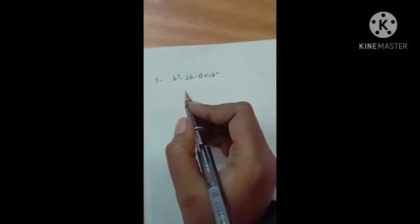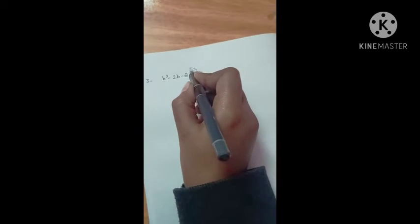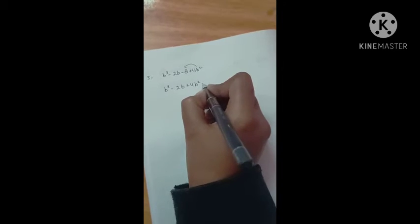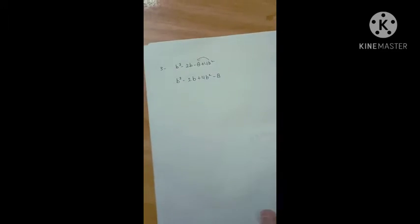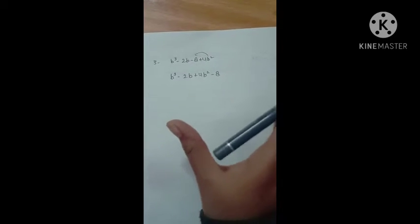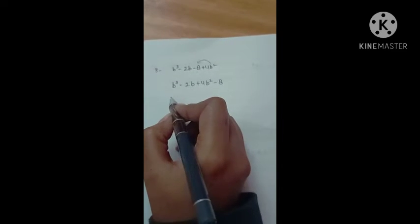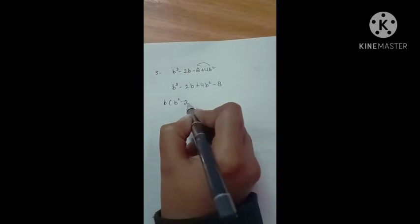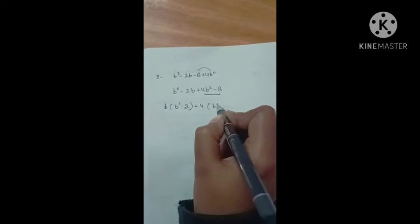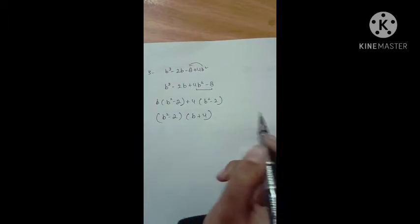Next: b³ - 2b - 8 + 4b². We rearrange by moving 4b², giving b³ + 4b² - 2b - 8. When you do lots of practice, you will know which term to move to get a suitable arrangement and a common binomial. We take b common from the first group: b(b² - 2), and 4 common from the second: 4(b² - 2). Then we take (b² - 2) as common, getting (b² - 2)(b + 4).